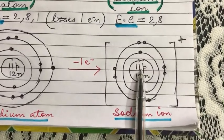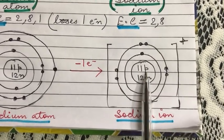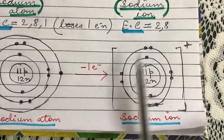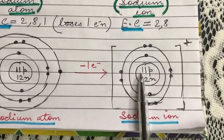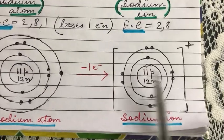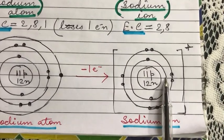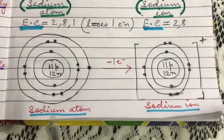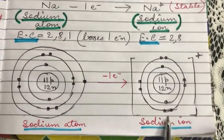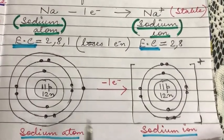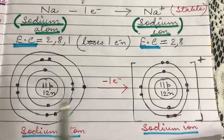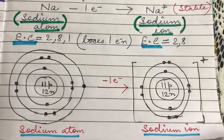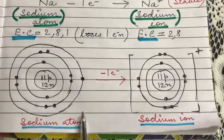Since it now has one electron less, protons outnumber electrons. There are still 11 protons, but the electrons have become 10. Since the number of protons is one more than the number of electrons, it gets a plus one charge. This is how the sodium atom forms the sodium ion, and this is why metals always lose electrons and always form electropositive ions.